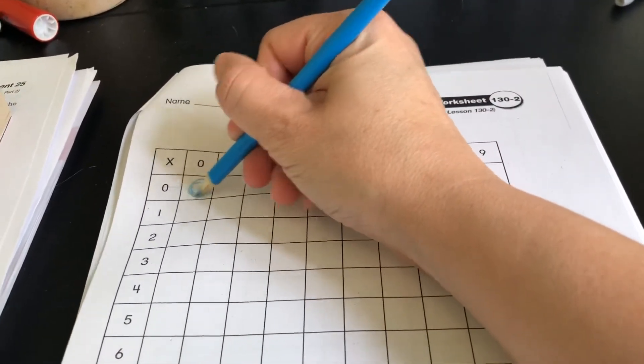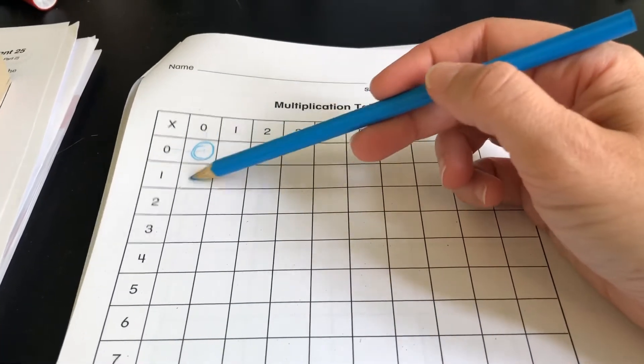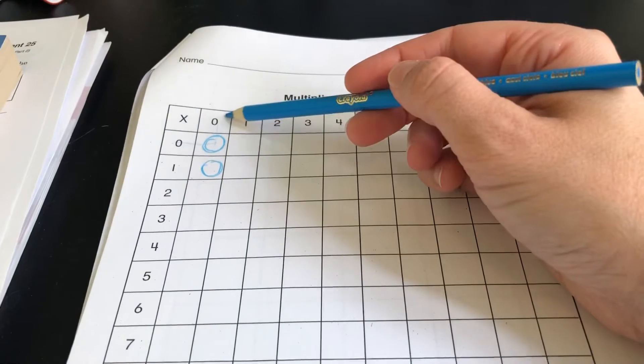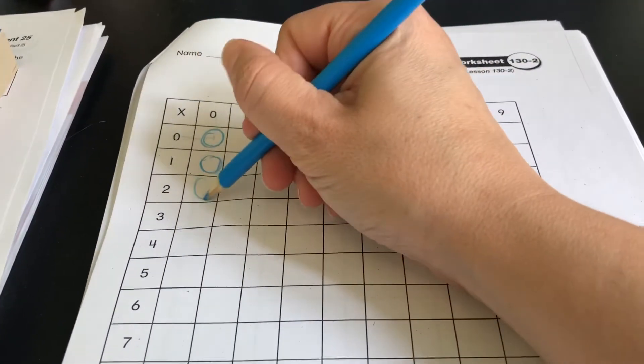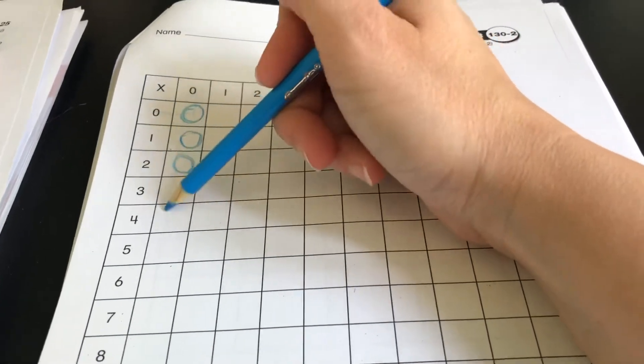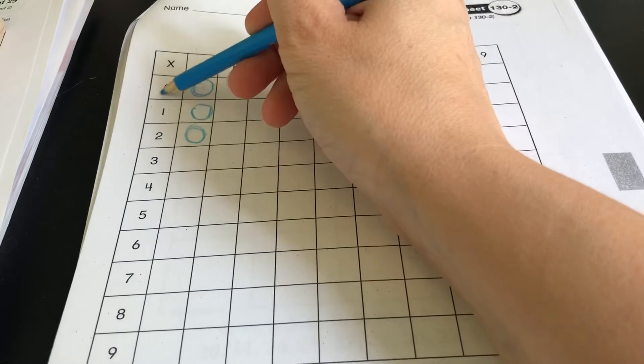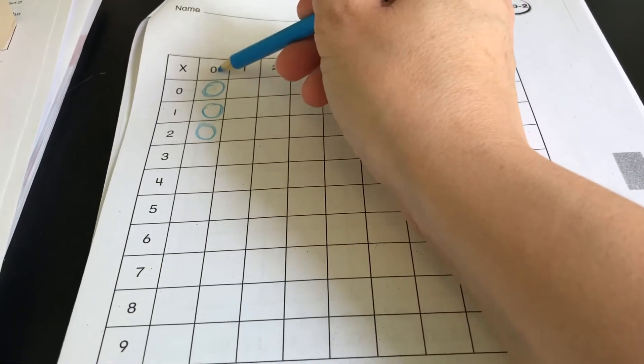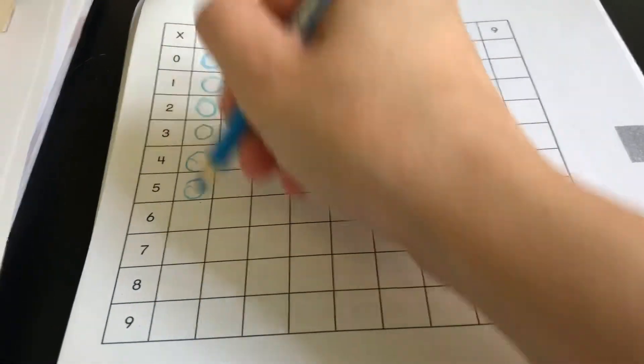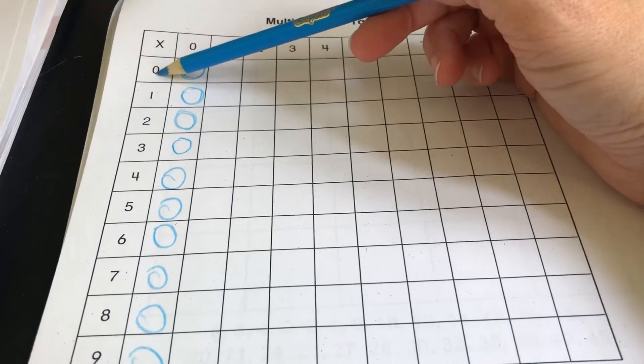One times zero, it's still zero. Two times zero, zero. What do you think is happening here? What happens any time you multiply a number by zero? Zero, it's zero. So in this, we're multiplying this number by this number. Zero times one. This number by this number. This number by this number. So all down this line, all of these numbers are zero.